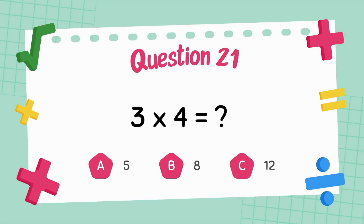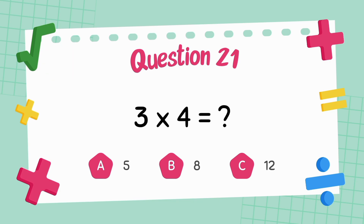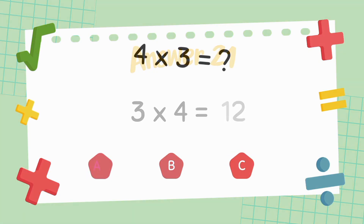What is three multiply four? The answer is twelve. What is four multiply three?